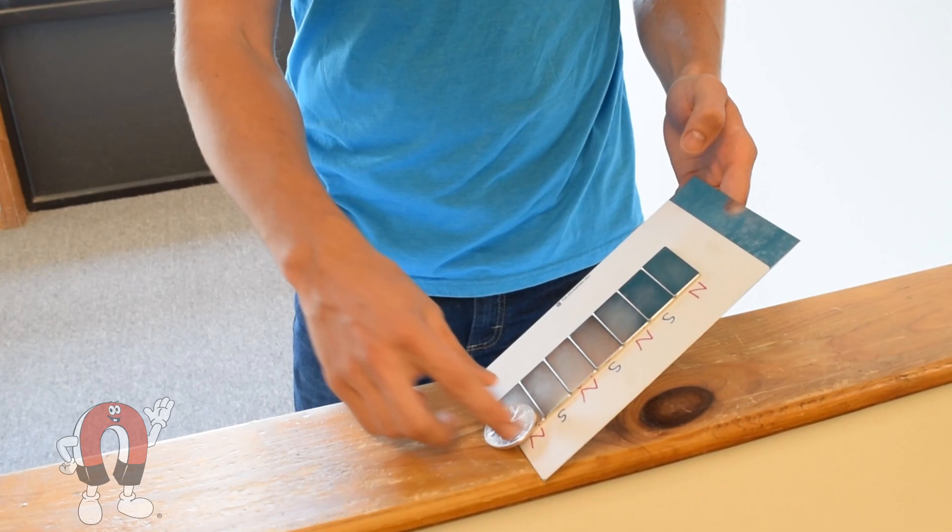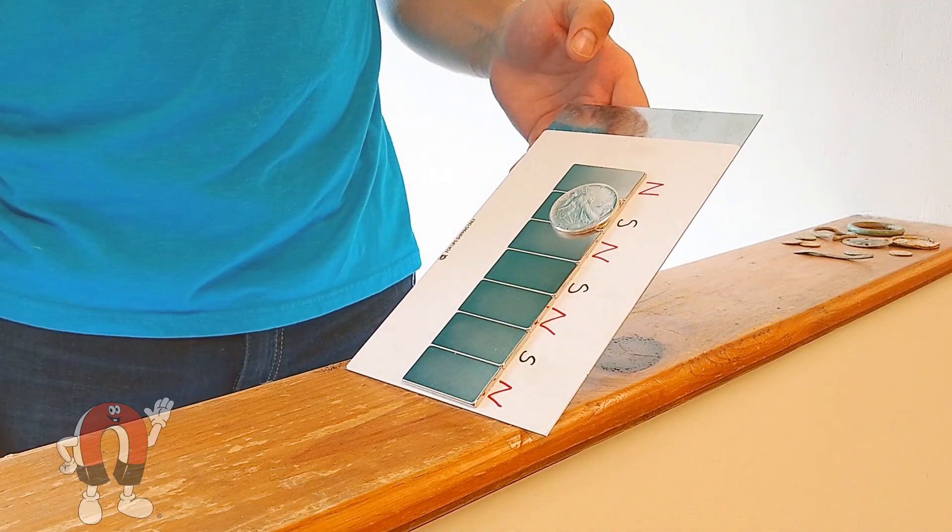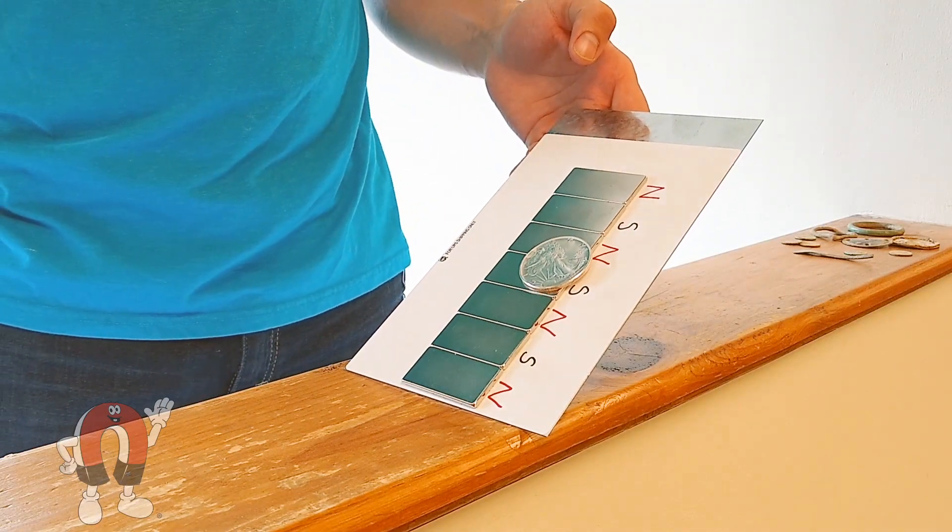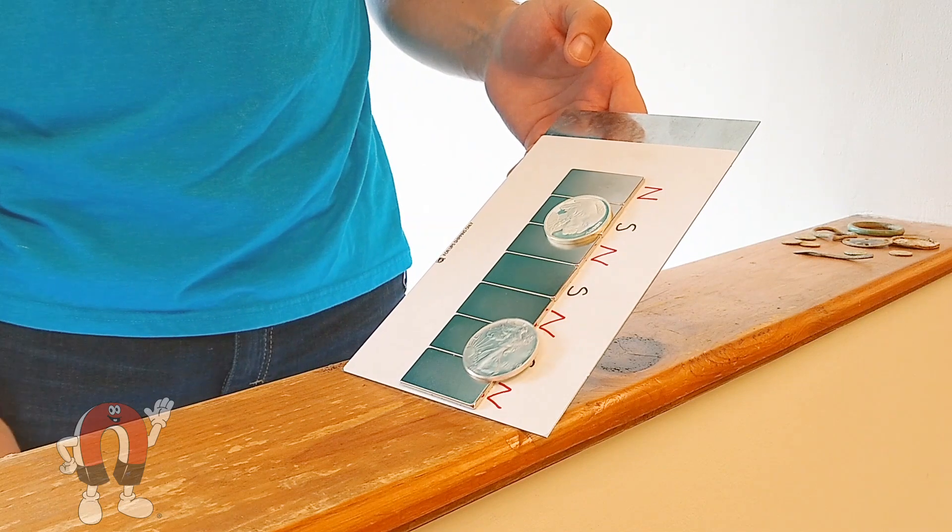This is because silver is a good conductor, which creates eddy currents that oppose the magnets. This is similar to what happens when you drop a magnet down a copper tube.